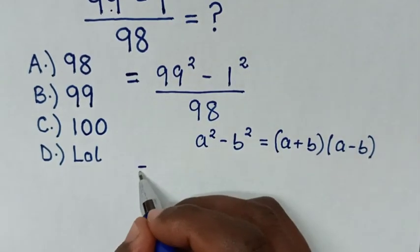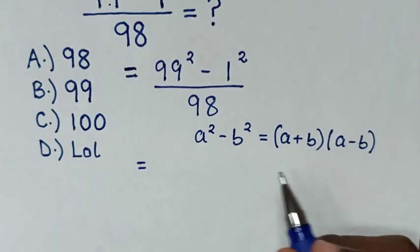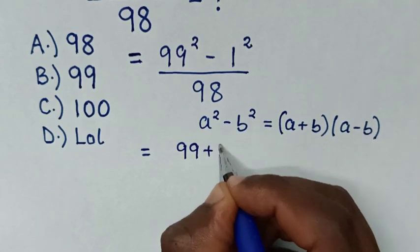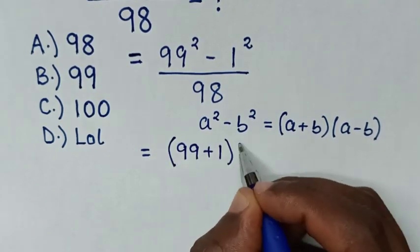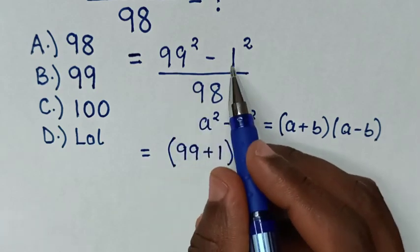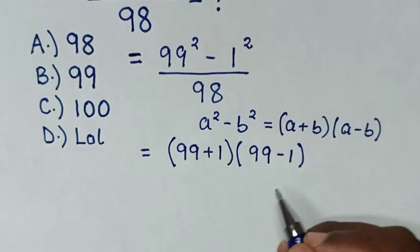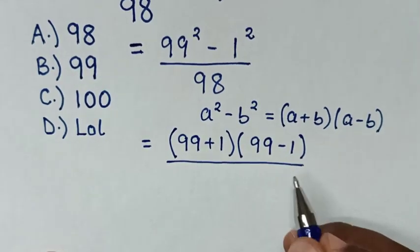It will be equal to, from A plus B, it will be 99 plus 1, then bracket times A minus B to be 99 minus 1, then bracket over 98.